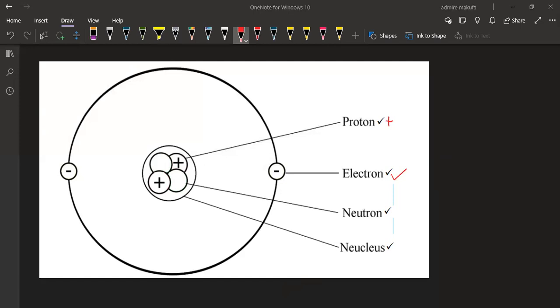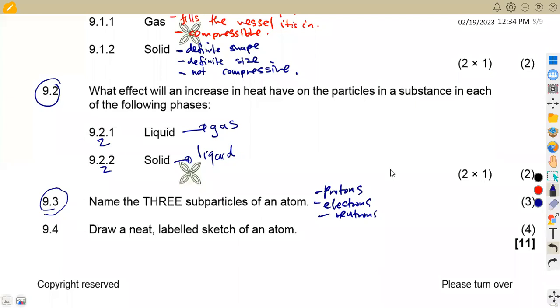So let's check back to the question. So that's what we had on question 9.4. It was to draw a neat labeled sketch of an atom that's four marks. So that's a total of 11 marks from this question. So that's what we had, guys, from Maison African Motives till we meet again.